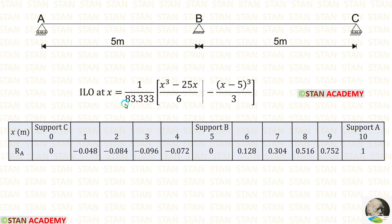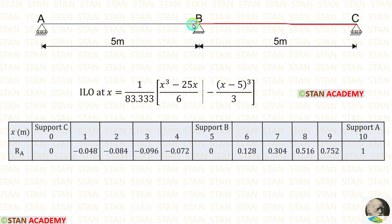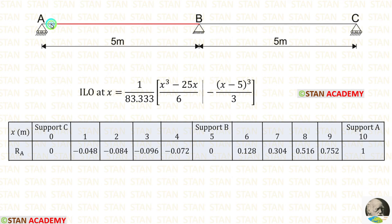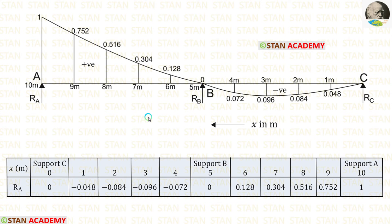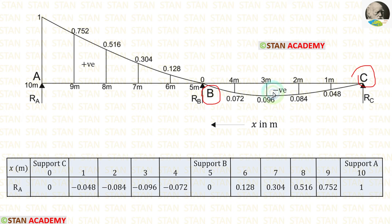Now let us make the ordinates. The ordinates start from point C and end at point A. For the ordinates from C to B, we use only the first part of the formula. From B to A, we use the whole formula. Finally, we can draw the diagram. The diagram is curved in shape. From A to B, we have positive values. From B to C, we have negative values.